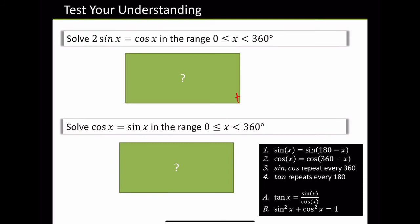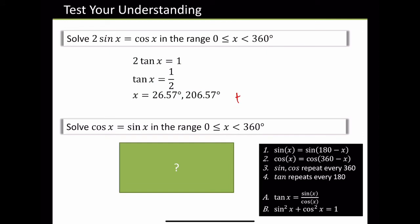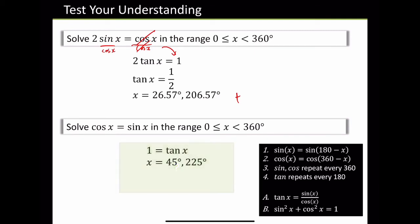Solve 2 sin x equals cos x. What can we do first? Divide by cos to get tan. A common mistake: if you divide cos x by cos x you're left with 1, not 0. Solve cos x — so again, 1 equals tan x — your two solutions.